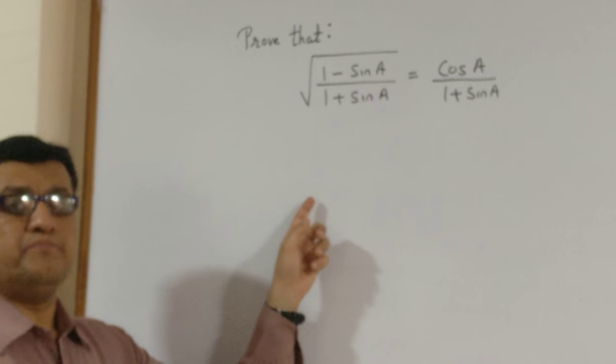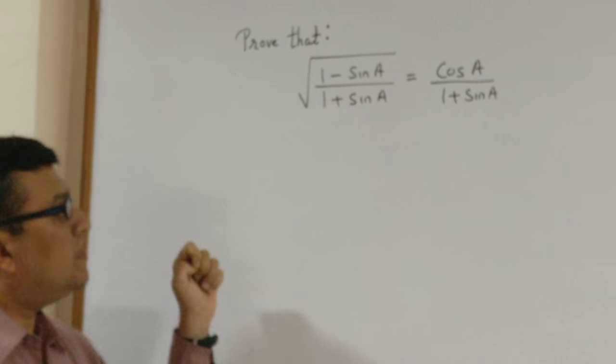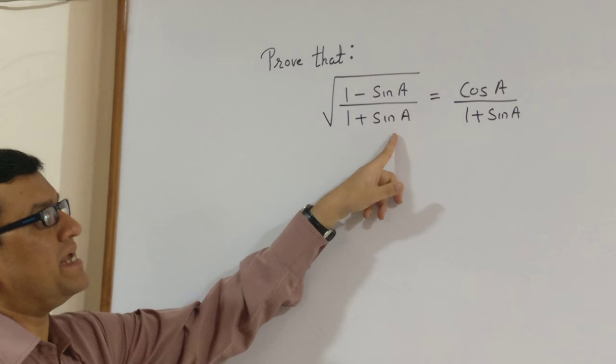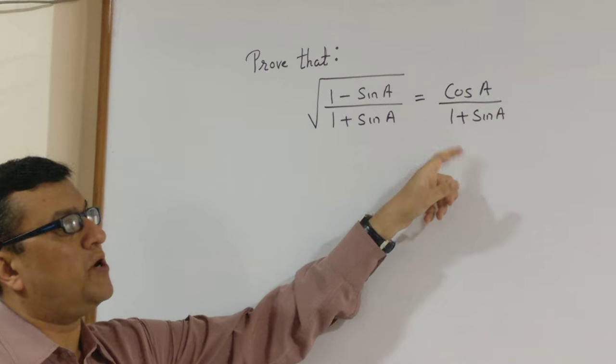Today we are going to see one sum based on trigonometric identities. The question says prove that the square root of 1 minus sine A upon 1 plus sine A is equals to cos A upon 1 plus sine A.